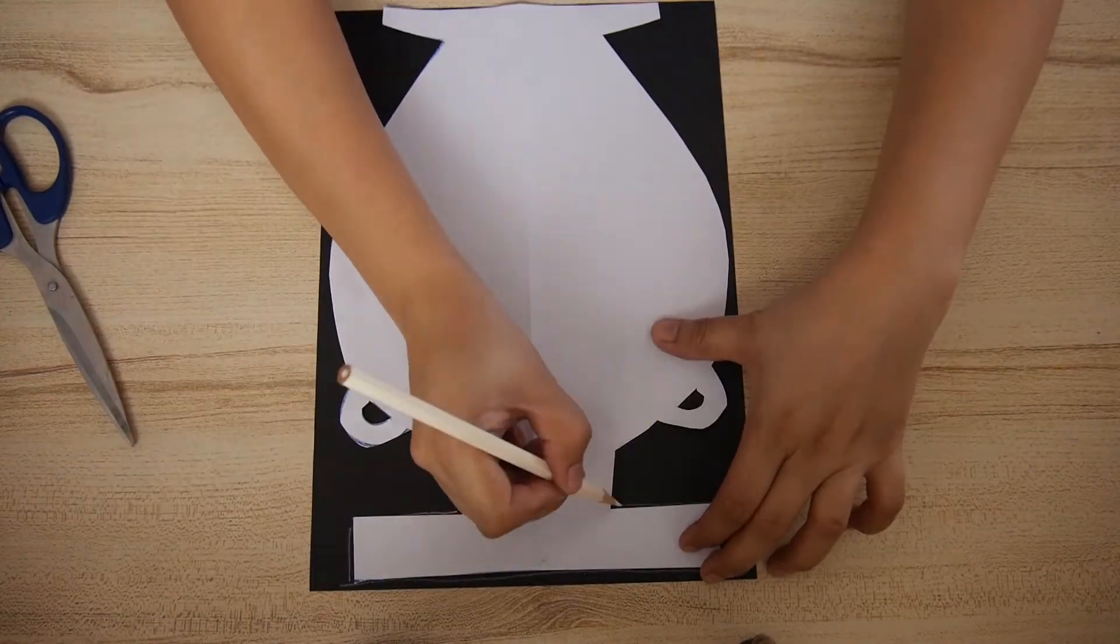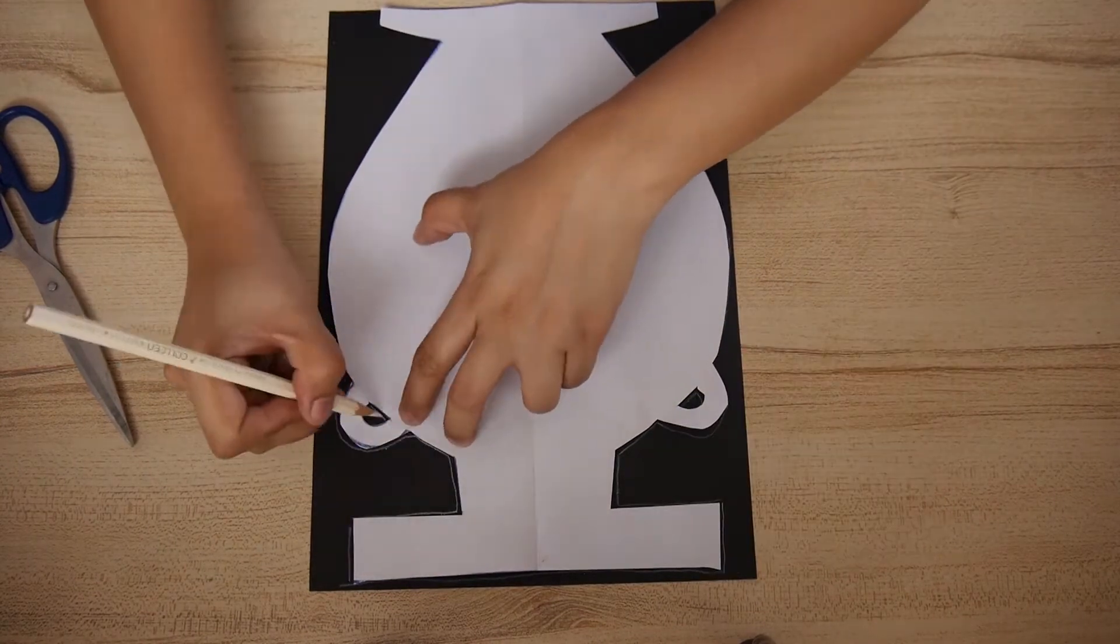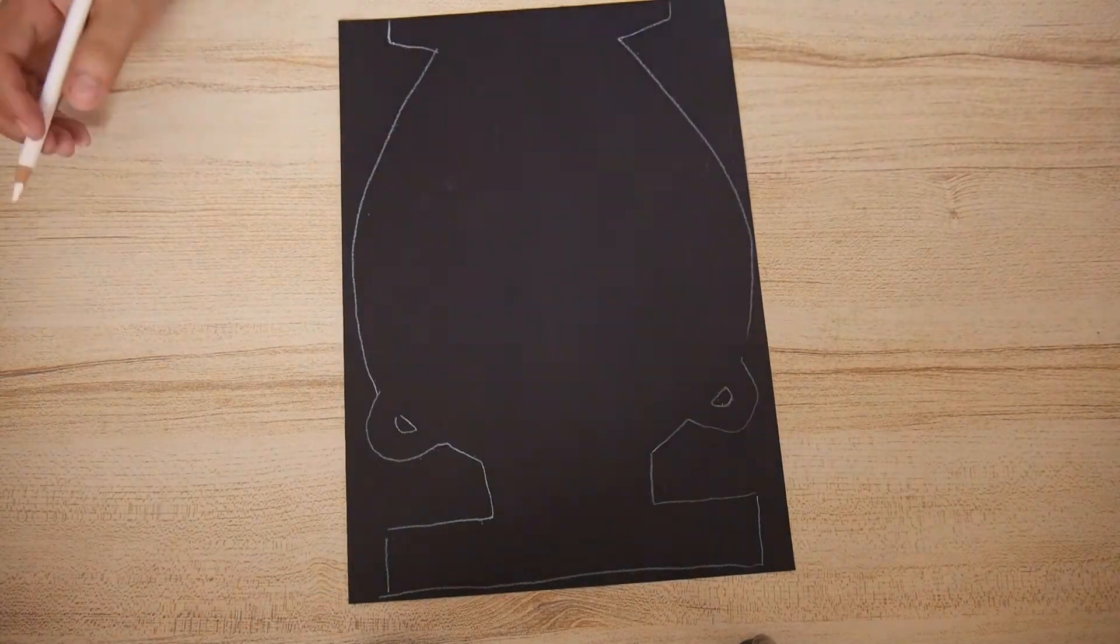Trace the shape of the amphora on a black paper. If you do not have a black paper, then you can skip this part.